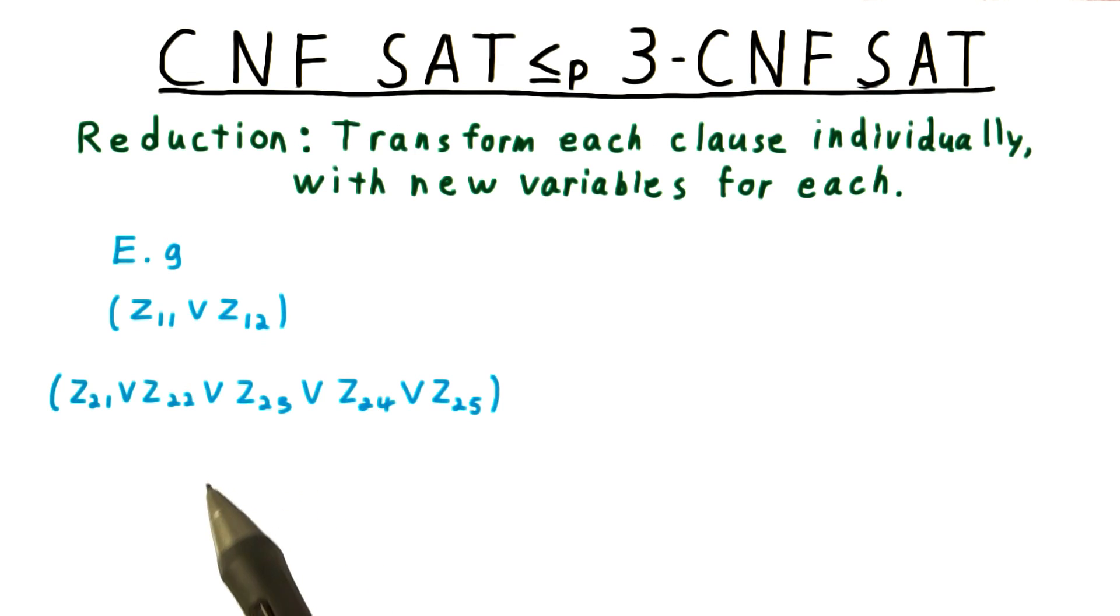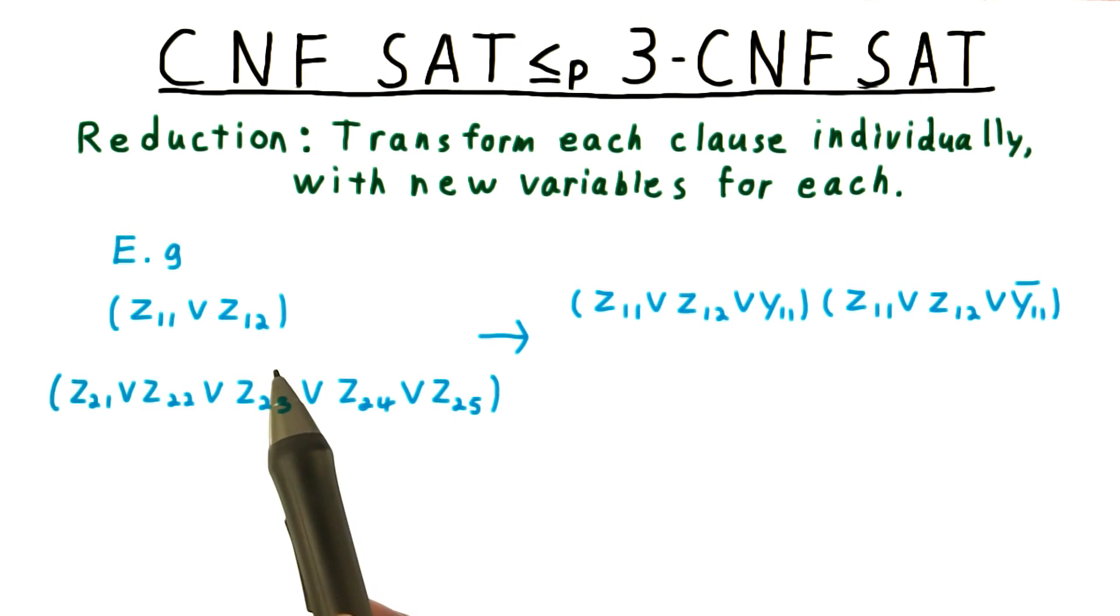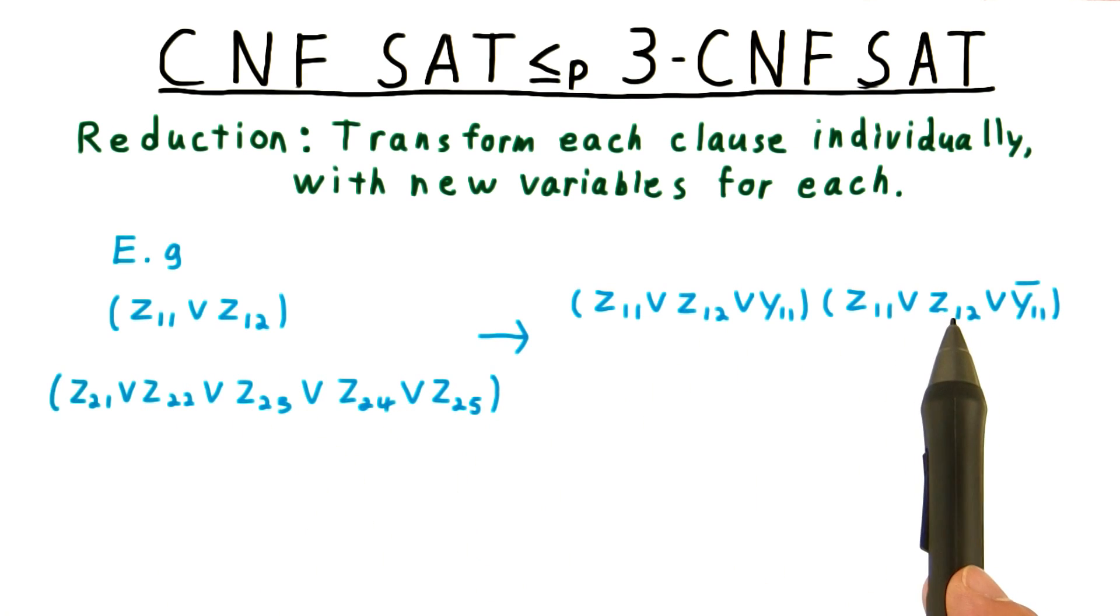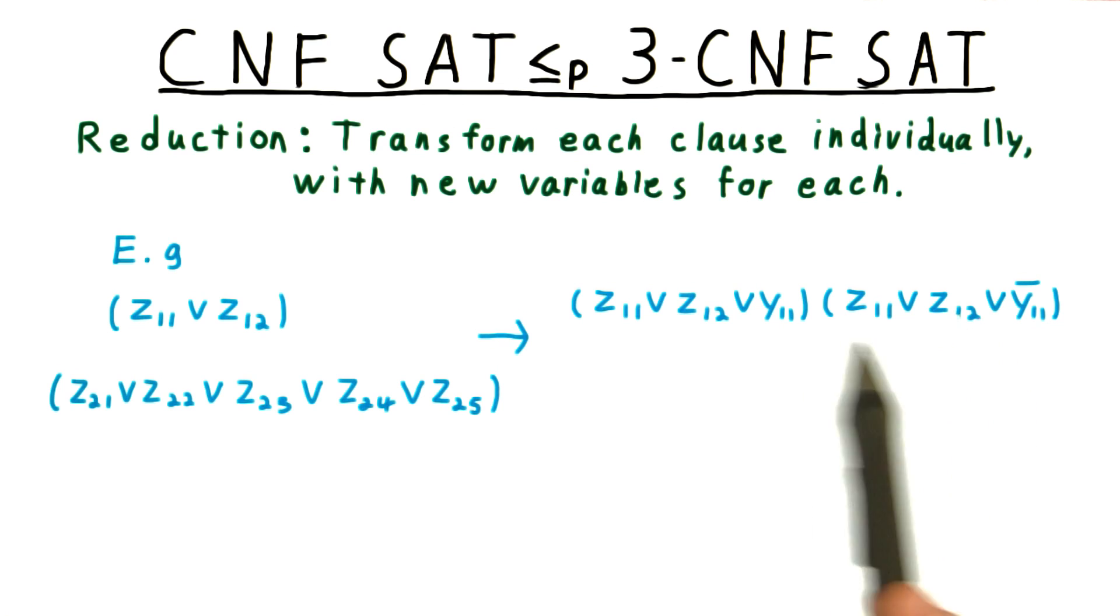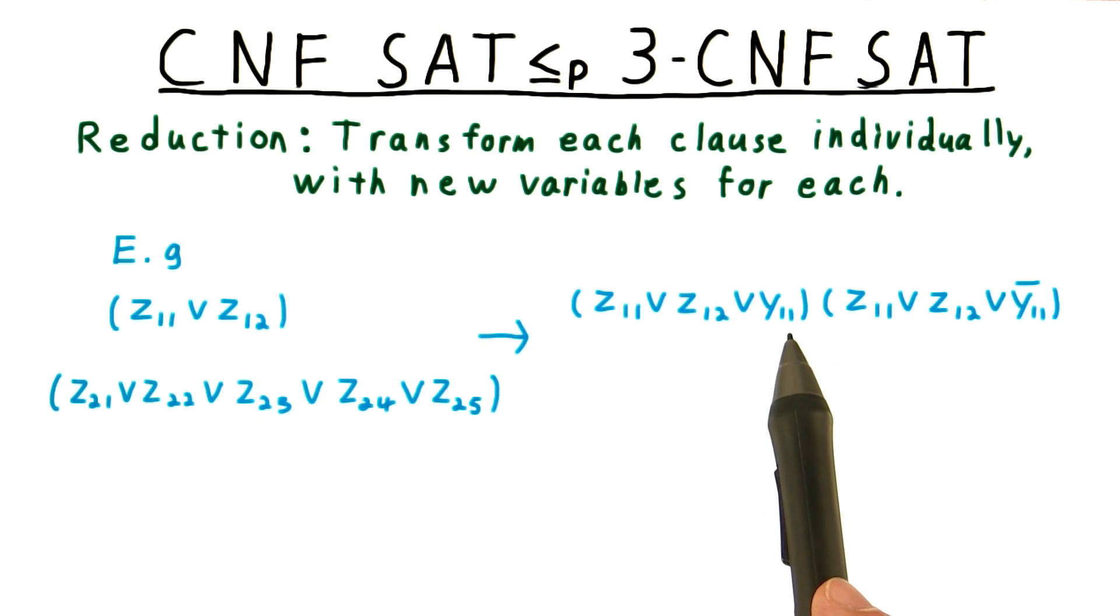I've indexed the literal z with two indices now. The first referring to the clause it's in, and the second being its enumeration within the clause. The first clause has only two literals, so we transform it into these two clauses with three literals by introducing a new variable y11.